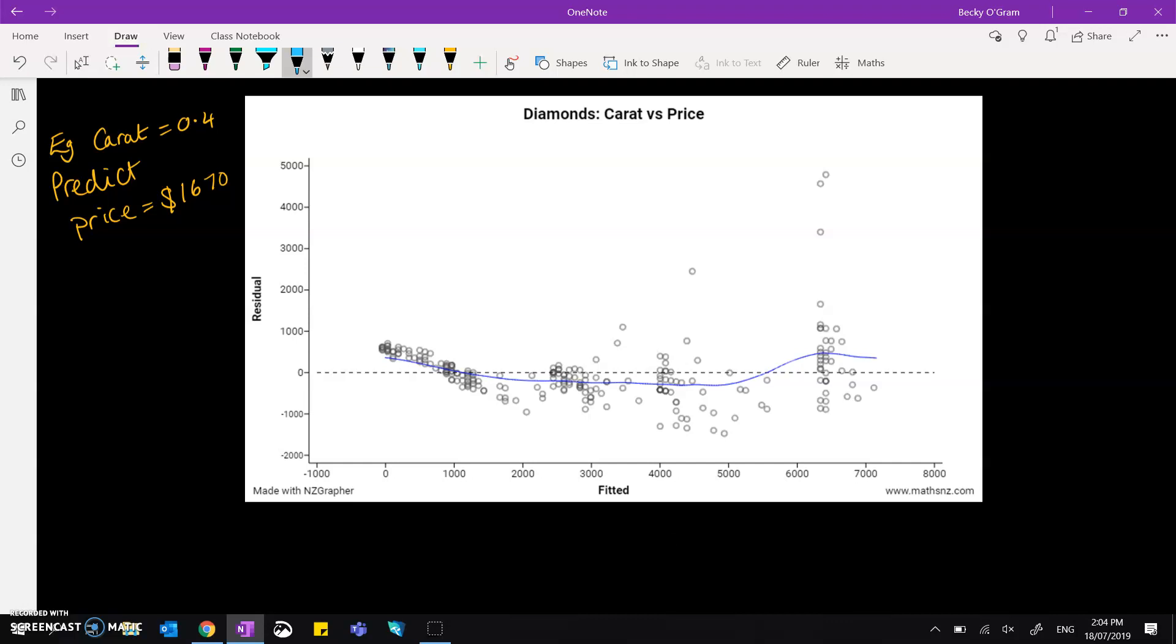Now if we look at the region of the price of 1670, and remember the prediction is what's down here on the x-axis on our residuals graph, if we take a look at what's happening at the graph at that point.